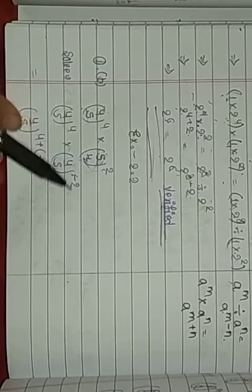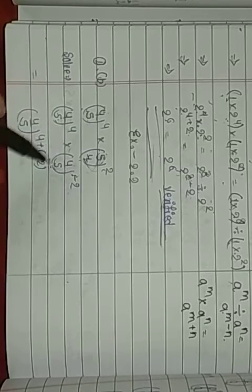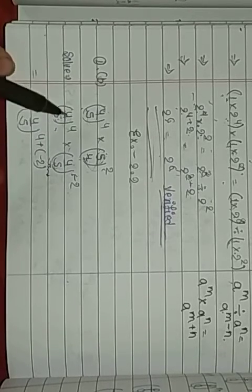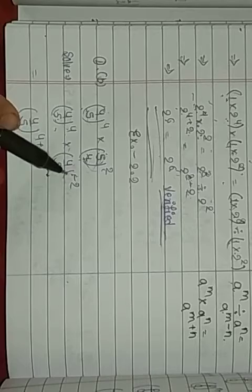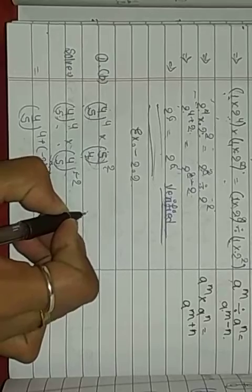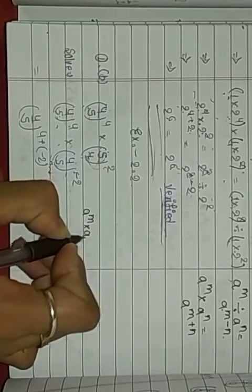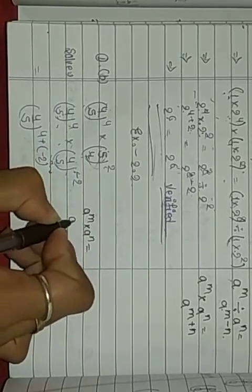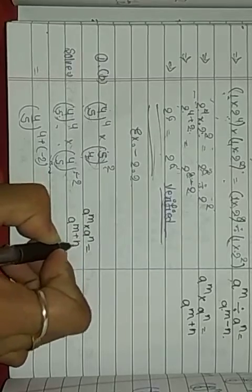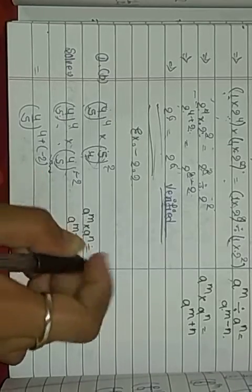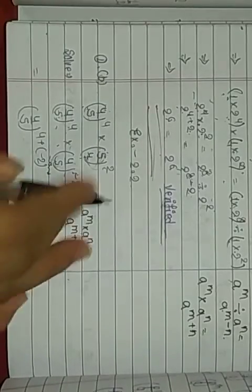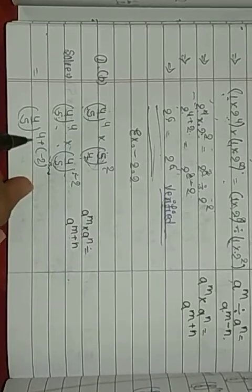We have taken 4 up and 5 below, so this is 4/5. The power was 2, so what will happen? Minus 2. Now look — both are 4/5 with different powers, and there is multiplication in the middle. Which rule applies? From the first exercise: a^m × a^n = a^(m+n). So we write 4/5 and add the powers: 4 plus minus 2.